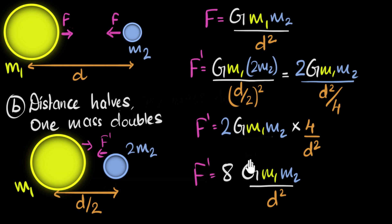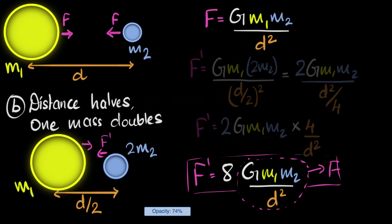And again, we can say that G M1 M2 by d squared is the same thing as the original force, F. And as a result, notice, our new force becomes 8 times F. And so it has increased 8 times. It kind of makes sense, right? They have come closer and the mass has also doubled. So we'd expect the force to increase a lot.